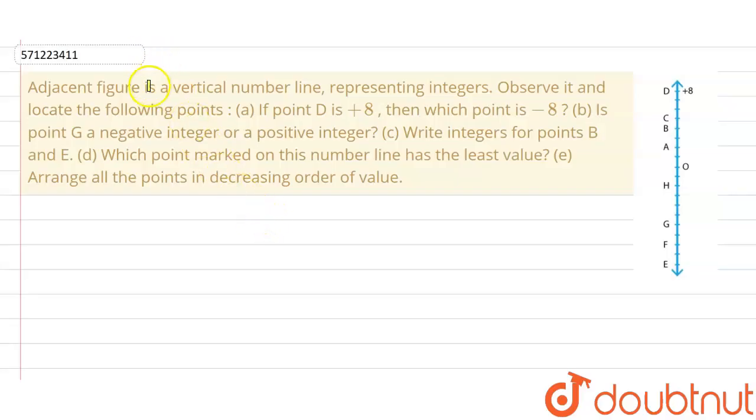Hello everyone, the question is: Adjacent figure is a vertical number line representing integers. Observe it and locate the following points. A) If point D is +8, then which point is -8? B) Is point G a negative integer or a positive integer? C) Write integers for points B and E. D) Which point marked on this number line has the least value? E) Arrange all the points in decreasing order of value.